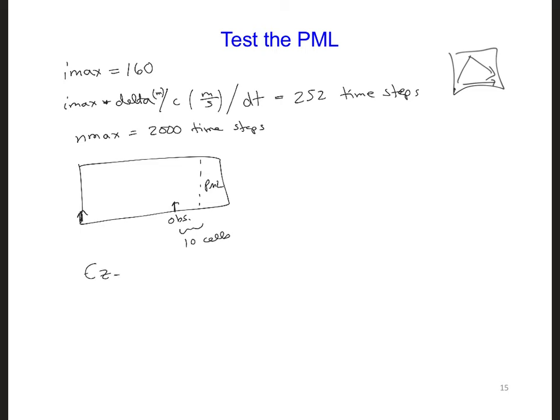So we can say EZObs, for observation. We're going to store it over every time step so that we can test how well the PML performs. We're going to look at if there are any reflections that are arising here from the PML, and we can see them at the observation point.